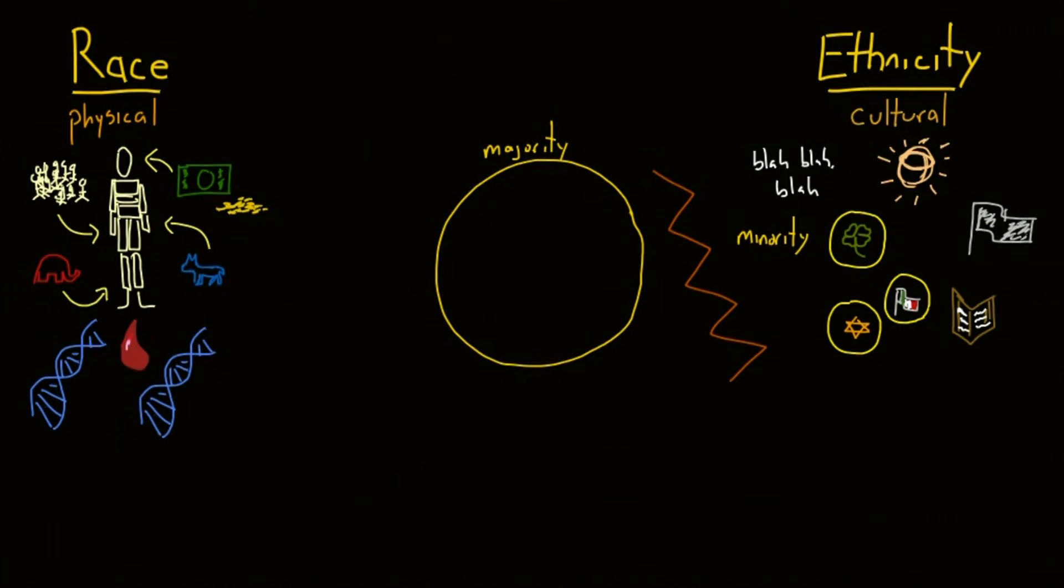Discrimination is the unjust treatment of a category of people simply because they belong to that category. It often results from prejudice, which is when someone has some preconceived opinion that isn't based on reason or experience.